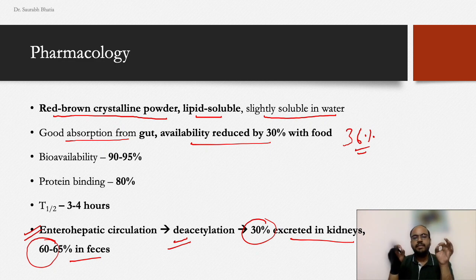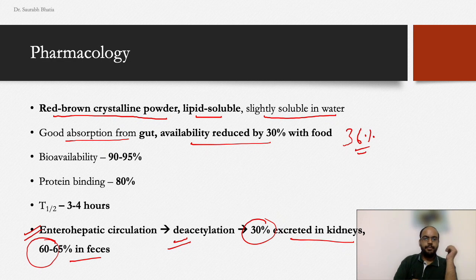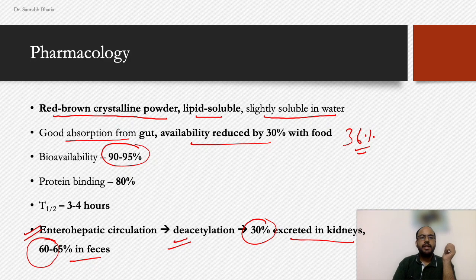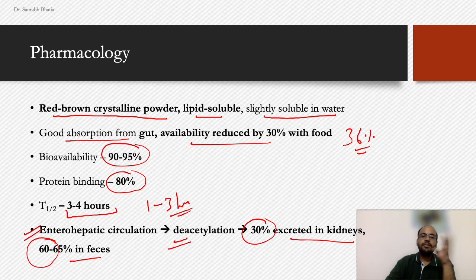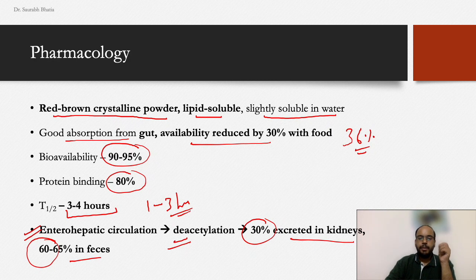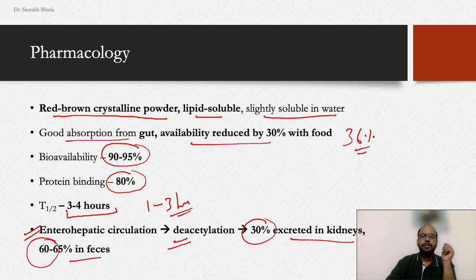Bioavailability is high — about 90–95% after a single dose. About 80% of the drug is protein-bound, and the half-life is roughly 3–4 hours, but can be reduced to around 1–3 hours after repeated administration due to the deacetylation mechanism. In leprosy, where we give a monthly dose, the half-life is roughly 3–4 hours.